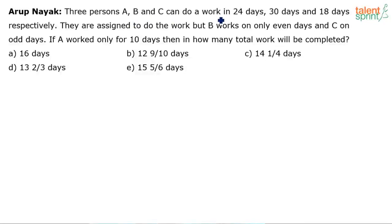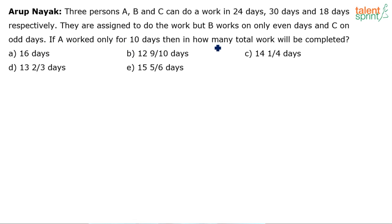Three persons A, B, and C can do a work in 24 days, 30 days, and 18 days respectively. They are assigned to do the work, but B works only on even days and C only on odd days. If A worked only for 10 days, in how many days will the total work be completed?